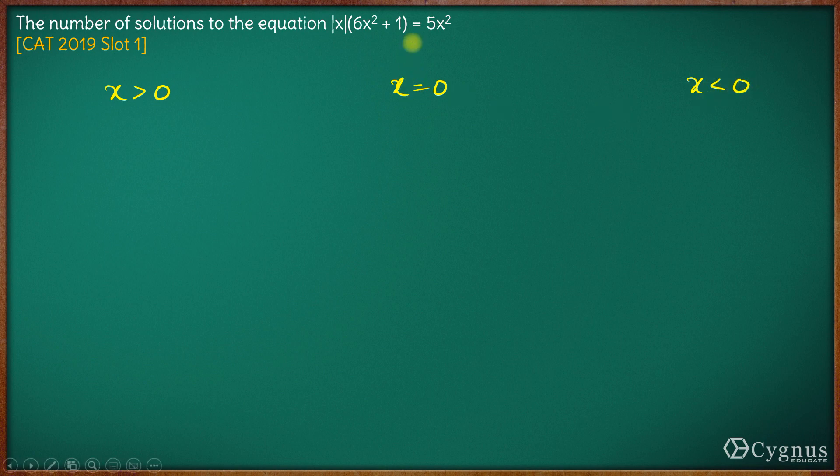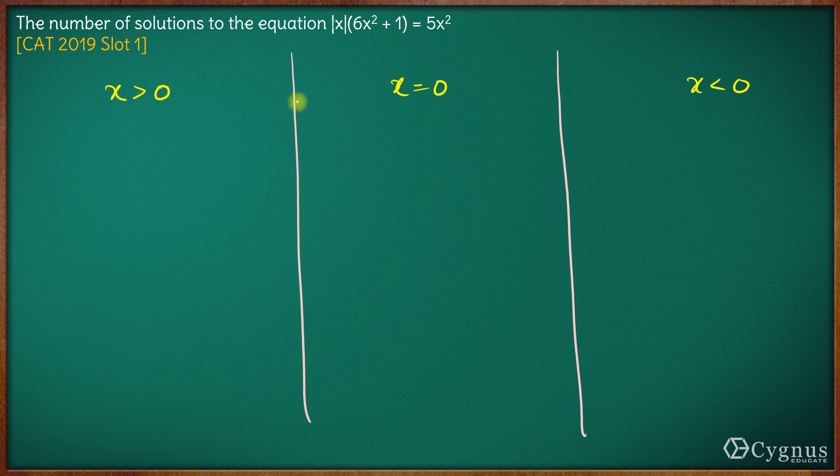I'm considering x equals 0 as a different case because when x is equal to 0, this whole expression is satisfied. So you can club x greater than or equal to 0 as well, it's up to you.